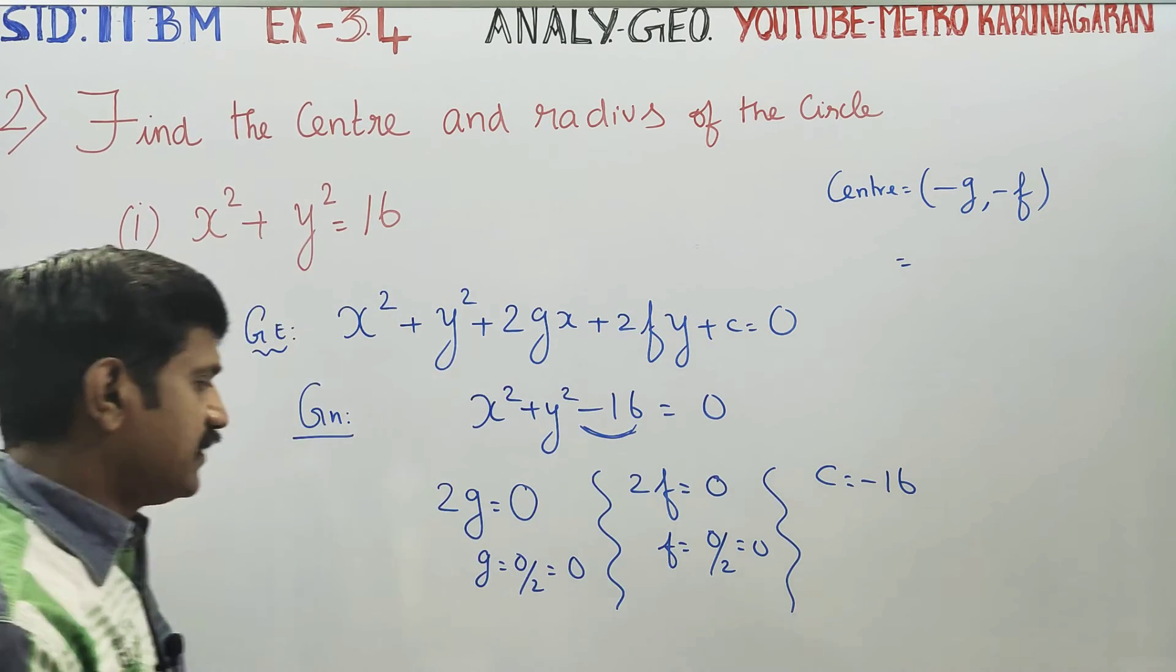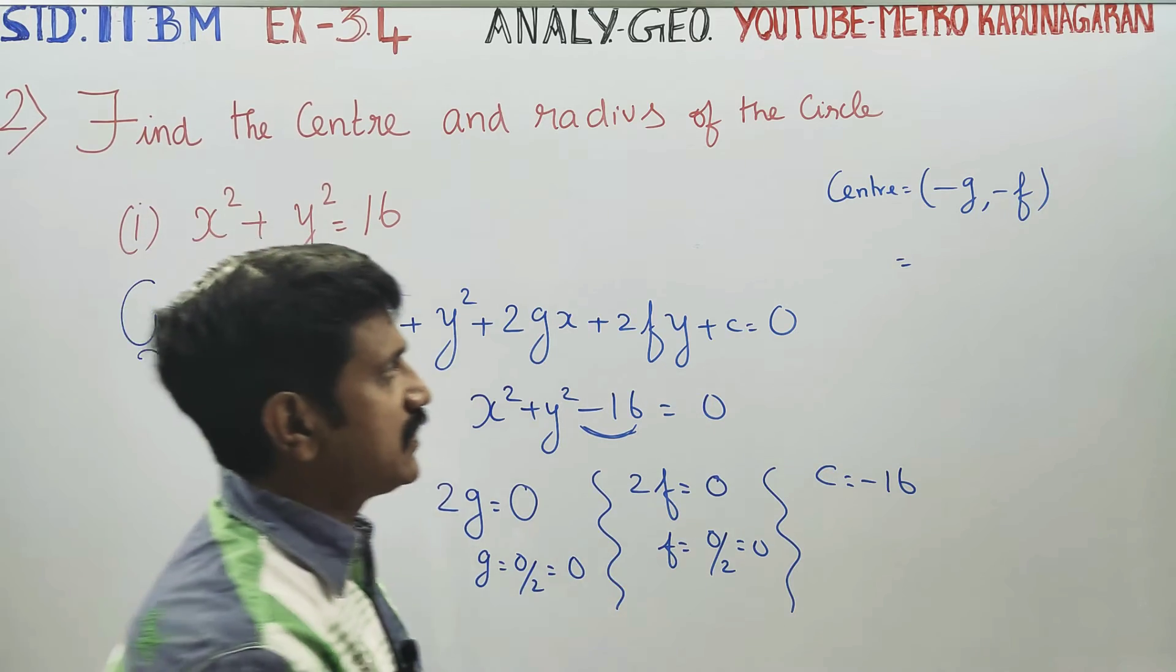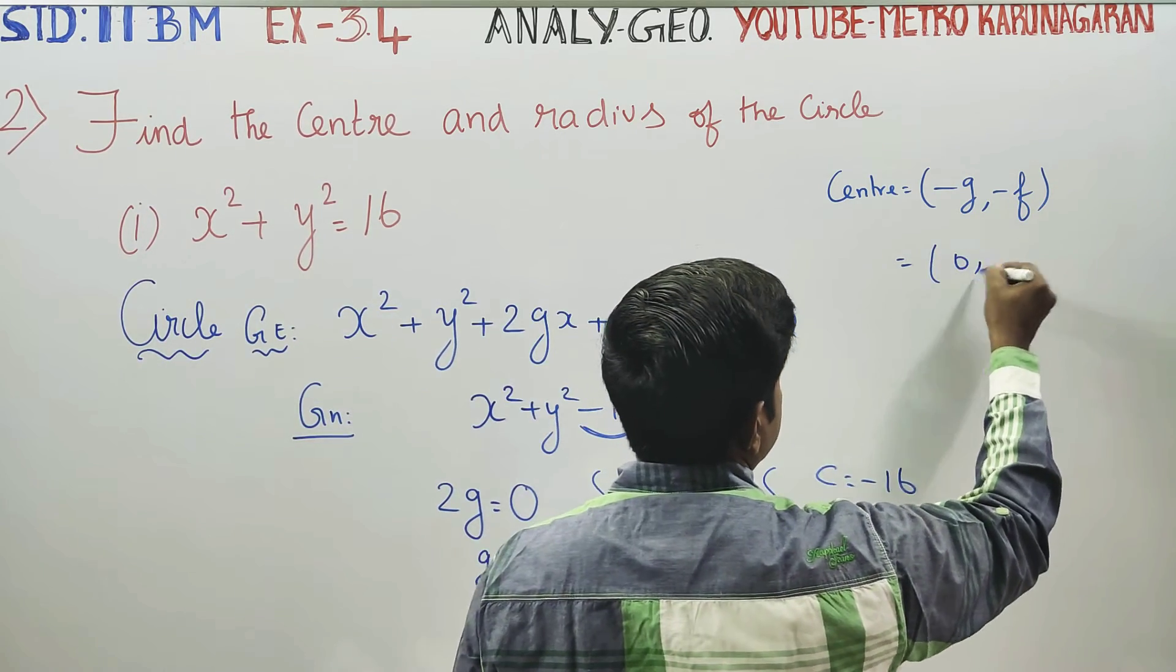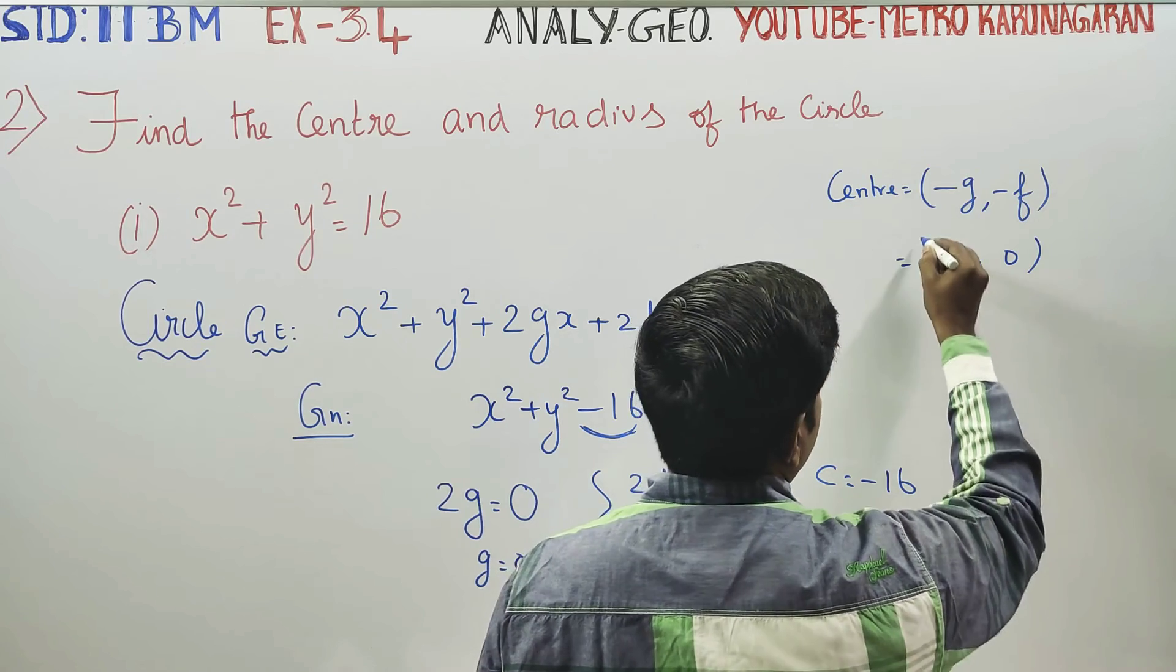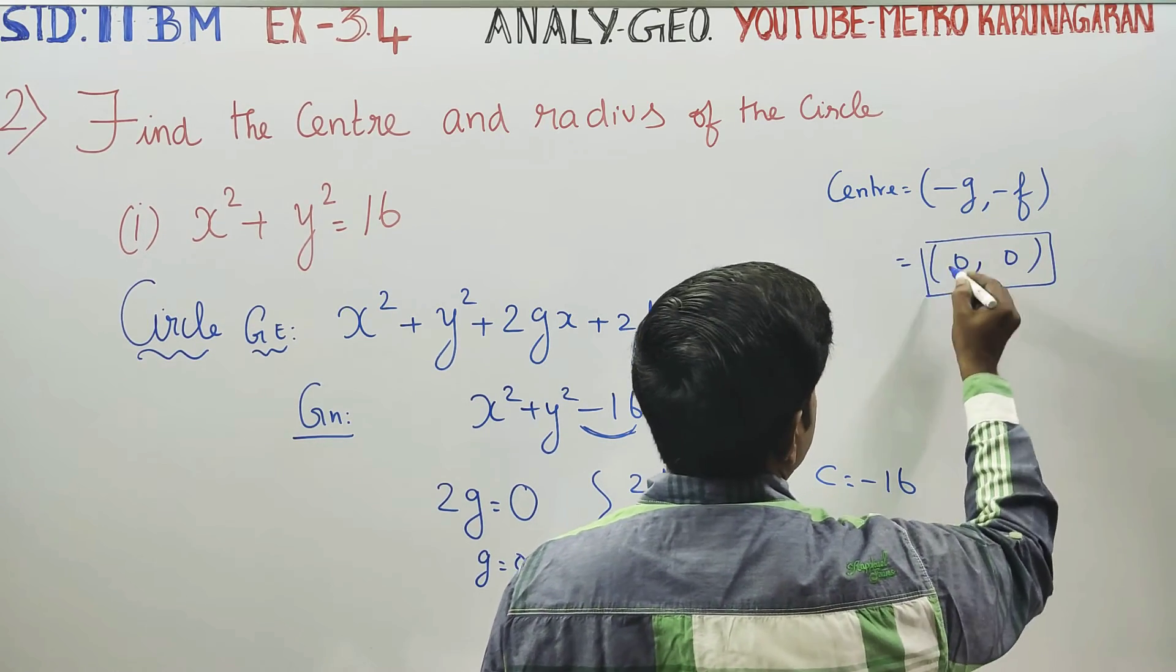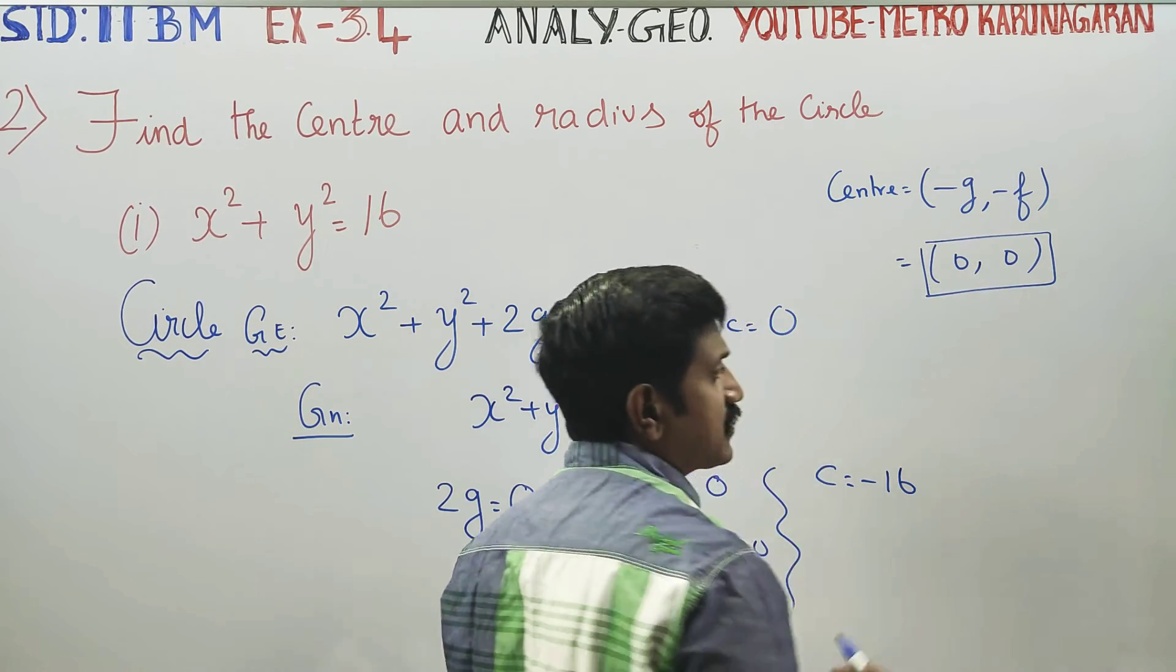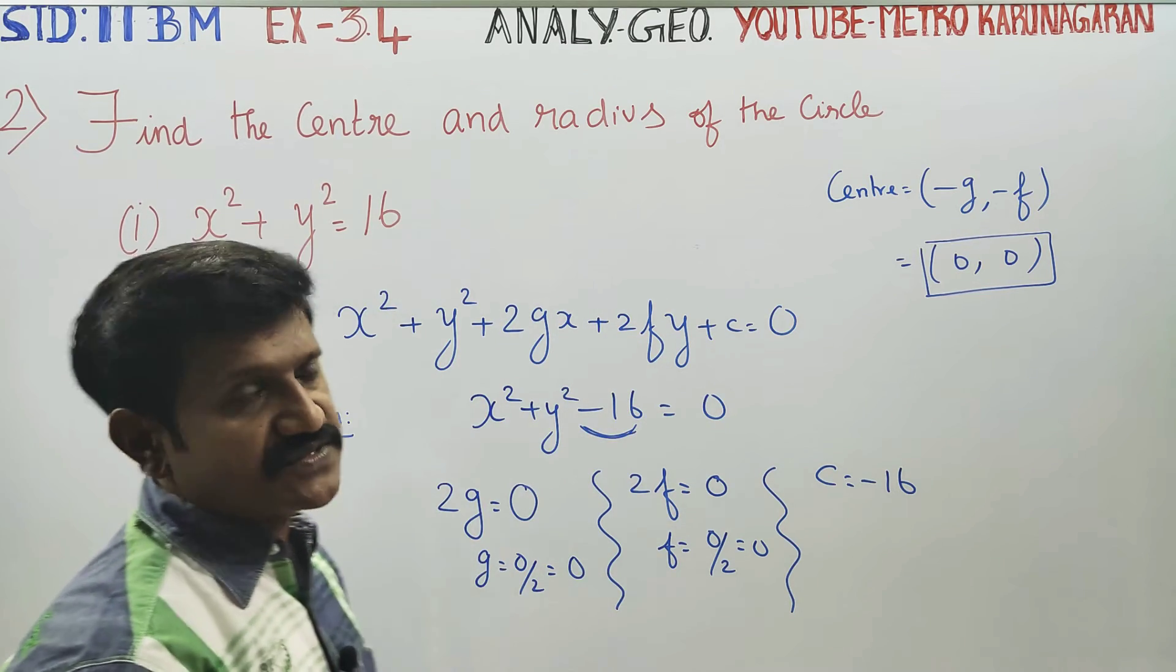With the value of 0 minus 0 is equal to 0. Then the radius.